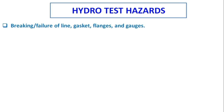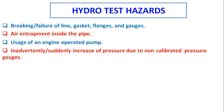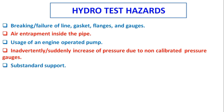Hydro testing hazards: the main hazards include breaking or failure of line, gaskets, flanges, and gauges; air entrapment inside the pipe; use of an engine-operated pump; inadvertent sudden increase of pressure; use of non-calibrated pressure gauges; substandard support; and pressure safety valve failure.